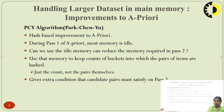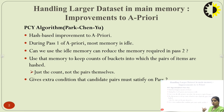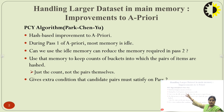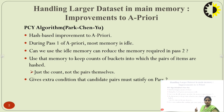In a-priori during pass 1, we find frequent itemset 1, then candidate and frequent itemsets 2, 3, and so on. We observed that most of the memory is idle during pass 1 of a-priori. The key idea is: can we use that idle memory to reduce the memory required in pass 2?